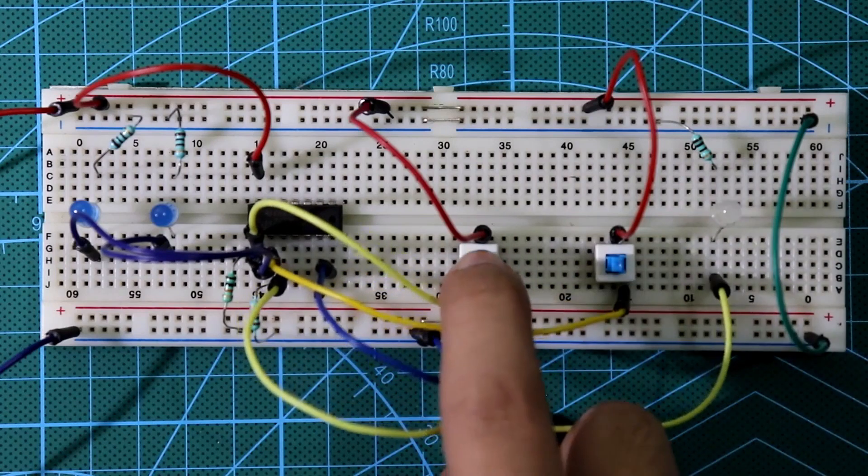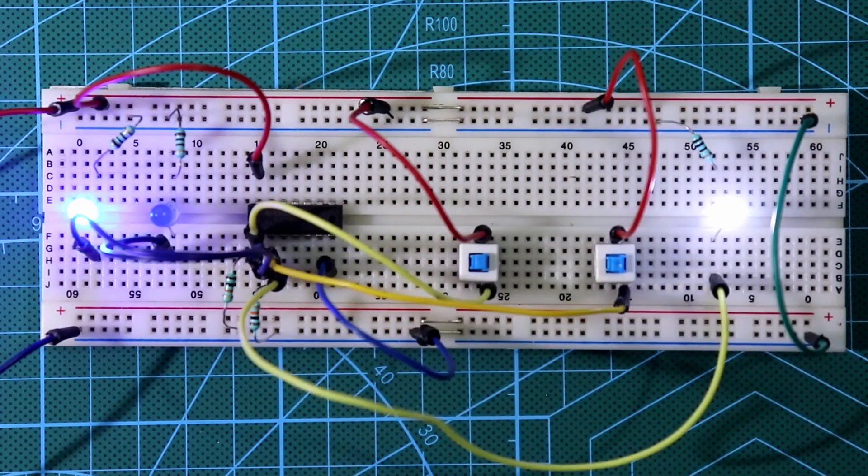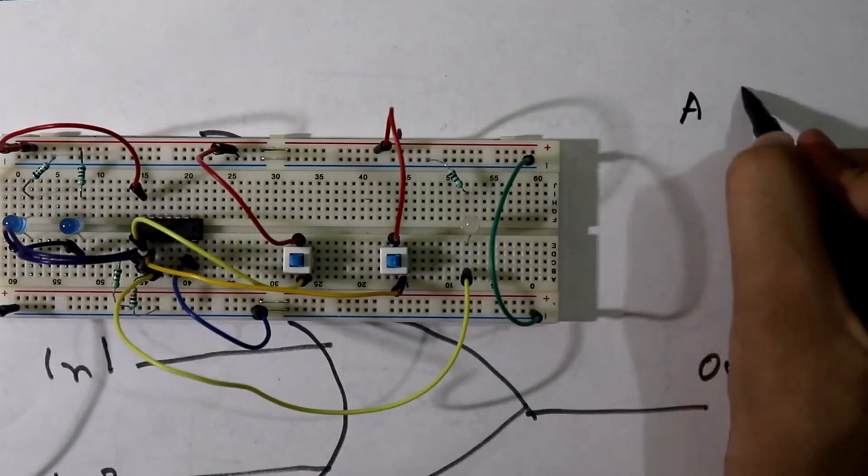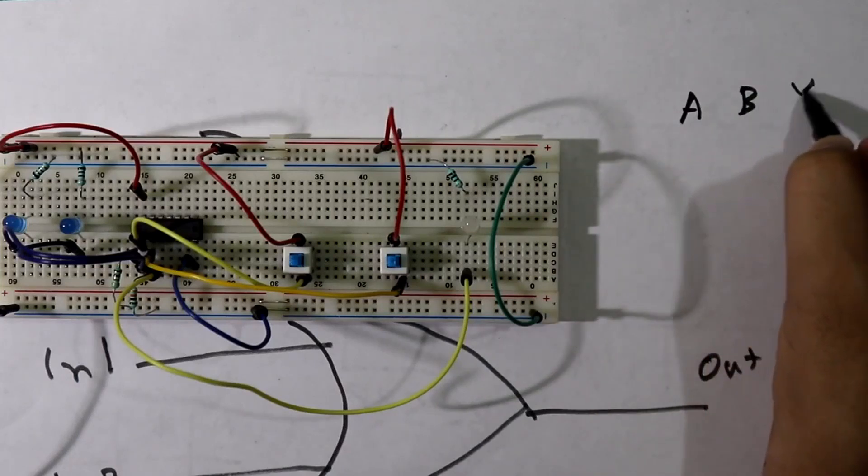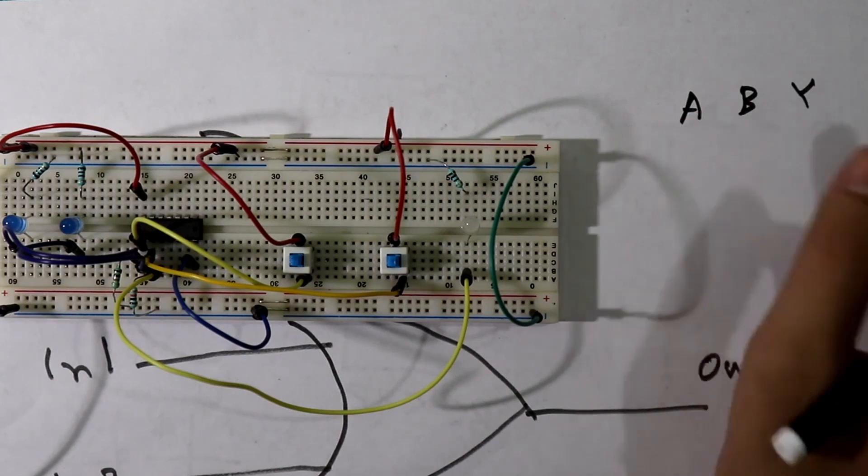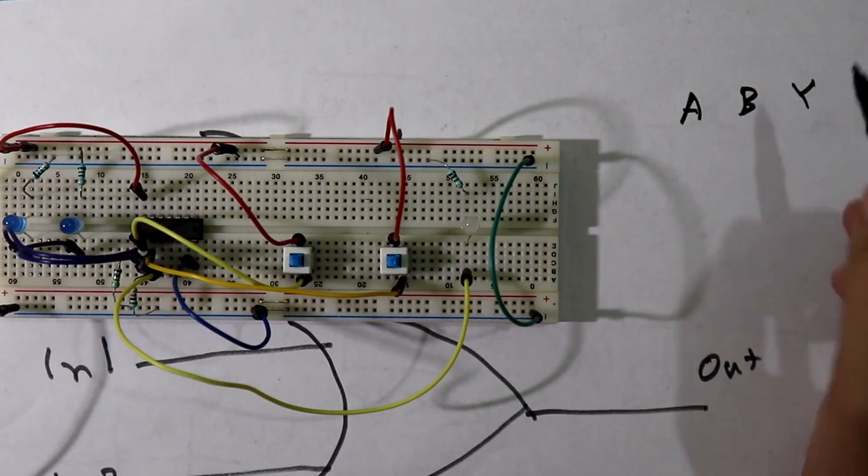Press input 1 here. See, we are getting output. So input 1, let's say A and input 2, let's say B and output Y. And I have explained about this in the previous video about the truth table.